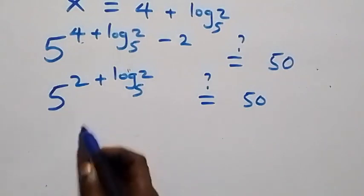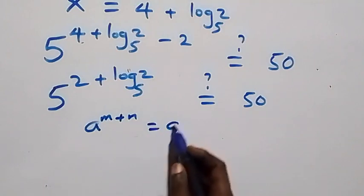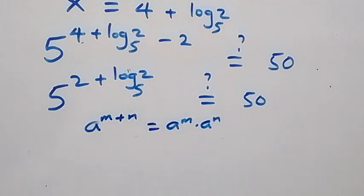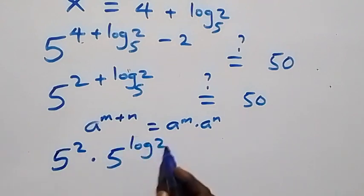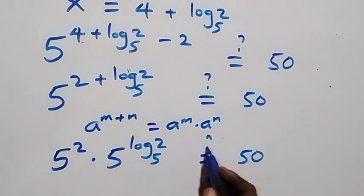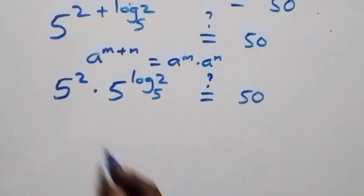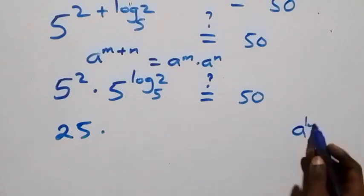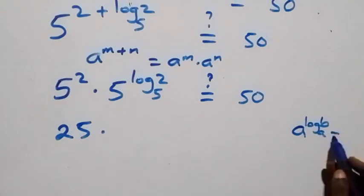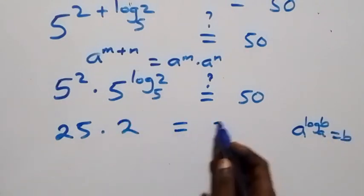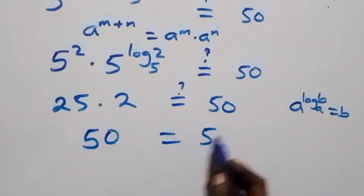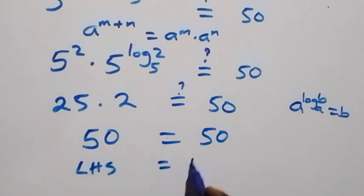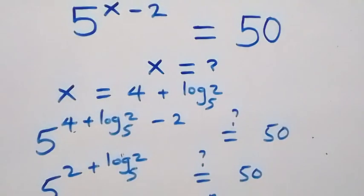From the law of indices, a raised to power m plus n is the same thing as a raised to power m times a raised to power n. What we have becomes 5 squared times 5 raised to power log 2 to base 5, equals to 50. Now 5 squared is 25, and following the rule a raised to power log b to base a equals b, this simplifies to 2. So 25 times 2 gives us 50, which equals 50. The left hand side equals the right hand side. Therefore, x equals to 4 plus log 2 base 5 satisfies this given problem.